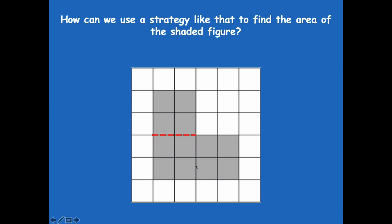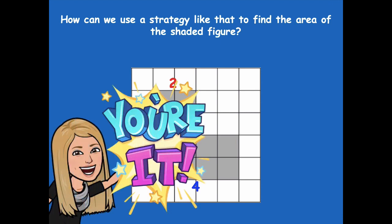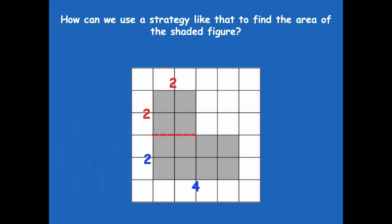You could also draw your line in a different place and still get two rectangles. I'll label the side lengths: the smaller square is 2 by 2, and the larger rectangle is 2 by 4. Find the area of each and combine them. Two times 2 is 4, and 2 times 4 is 8. Four plus 8 equals 12, so the total area is 12 square units. You can also check that by counting your squares.